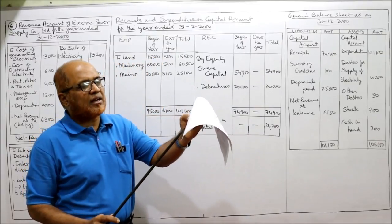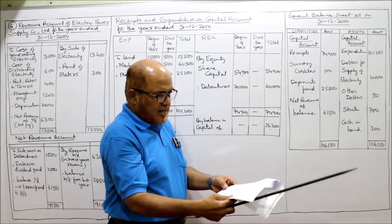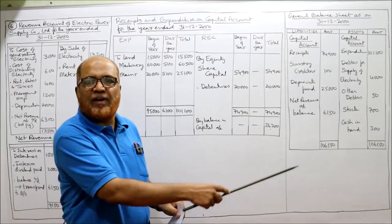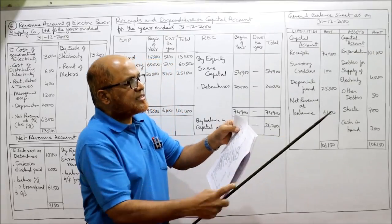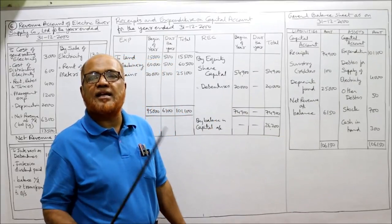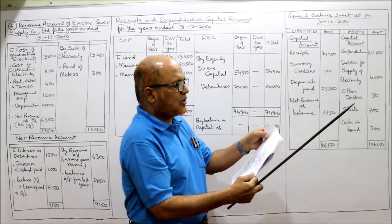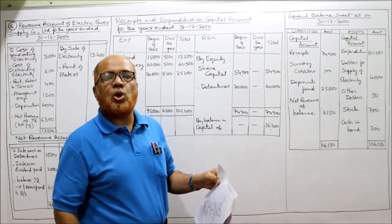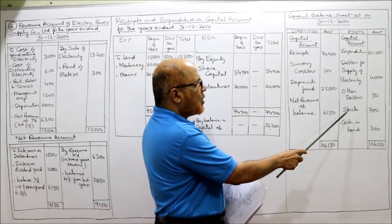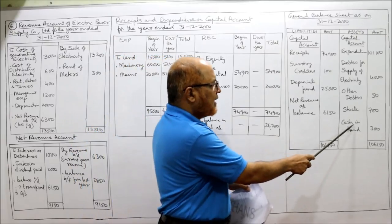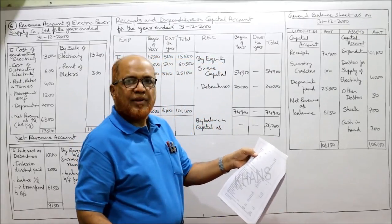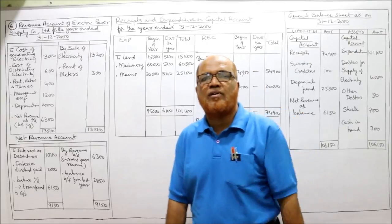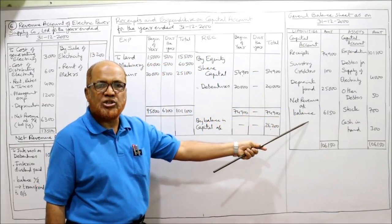Sundry creditors (100) go on the liability side. Depreciation fund (25,000) is taken on the liability side. Sundry debtors for current supply (4,000) and other debtors (50) go on the asset side. Stores on hand (stock) also goes on the asset side. Cash balance (300) is on the asset side. Net revenue account balance (6,150) is taken on the liability side of the general balance sheet.